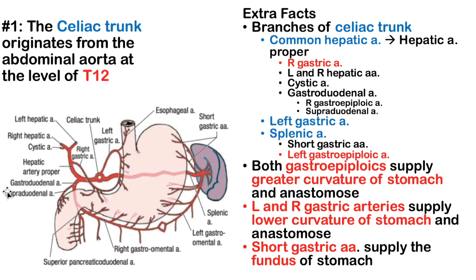The gastroduodenal artery will go on to form two arteries. The greater curvature of the stomach is supplied by the gastroepiploic arteries, sometimes written as gastro-omental arteries, which run around the greater curvature and anastomose. The right gastroepiploic artery comes off the gastroduodenal branch, and it anastomoses with the left gastroepiploic artery, which comes from the splenic artery. Remember, the splenic artery comes from the celiac trunk.